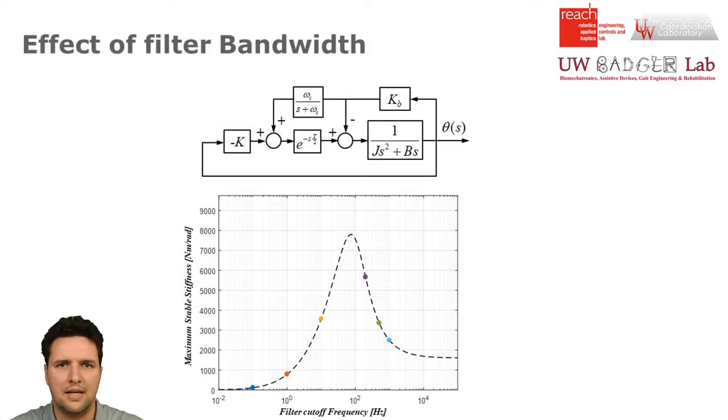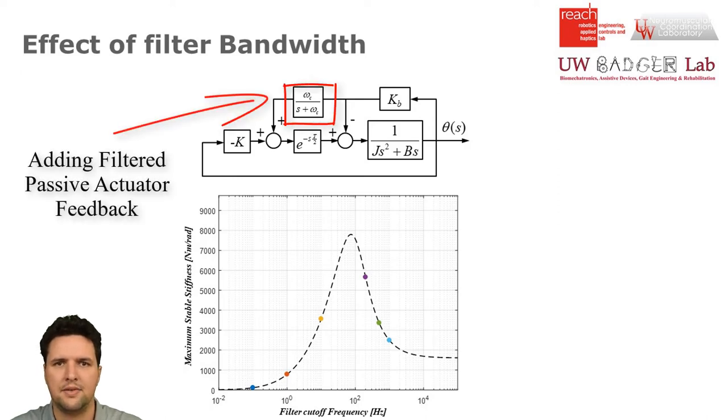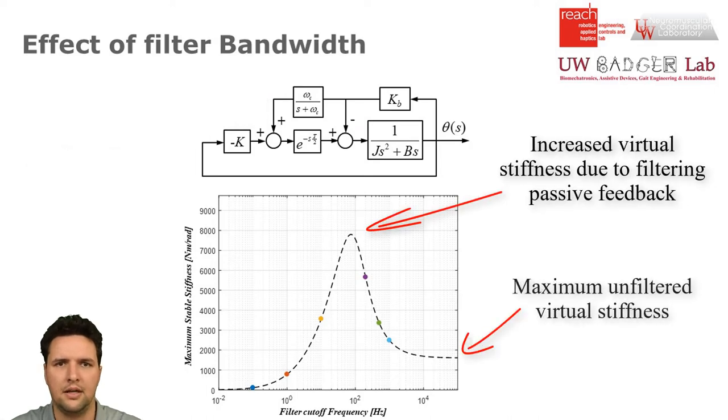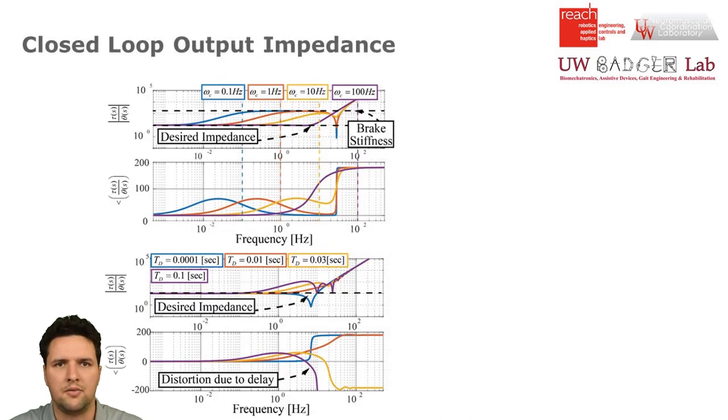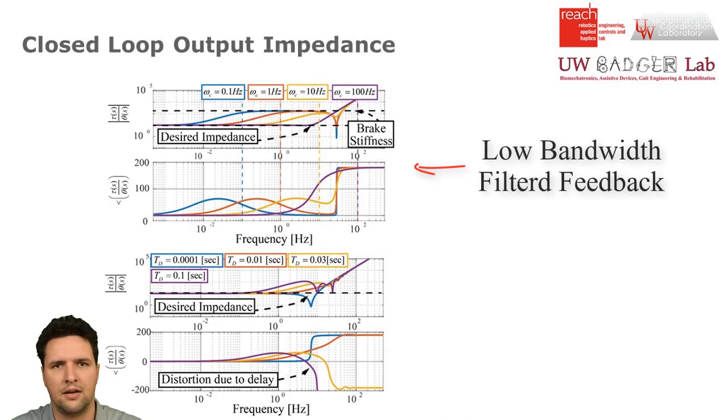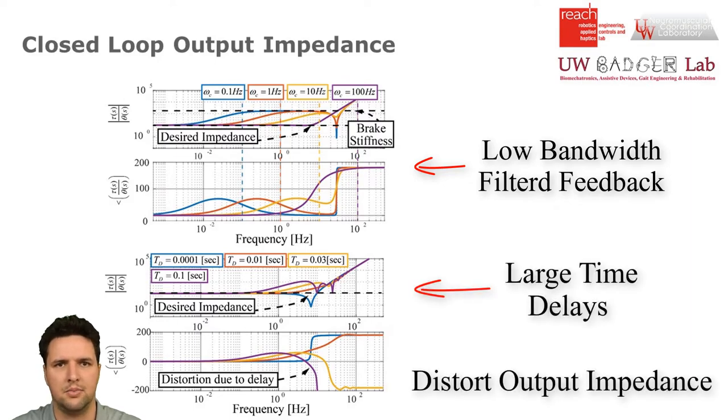However, unfiltered passive actuator feedback is not always possible or even desirable. Filtering passive actuator feedback can increase the range of uncoupled asymptotically stable virtual stiffness beyond the unfiltered case previously examined. Increasing the stable virtual stiffness in this way must be done carefully, though, because low-bandwidth filtered feedback and large time delays can distort the system's output impedance.